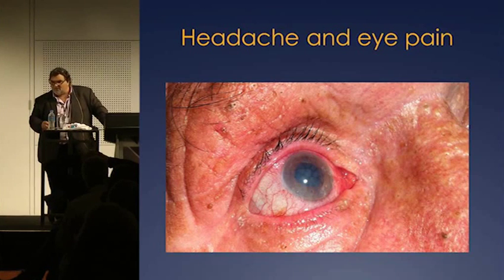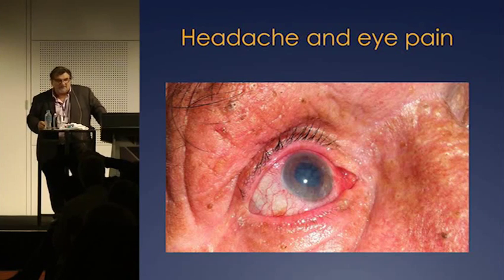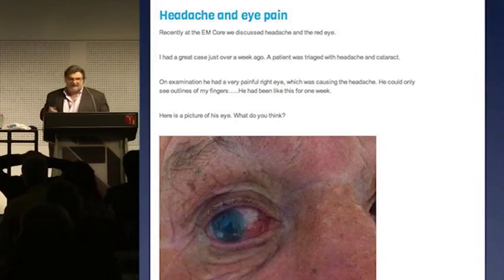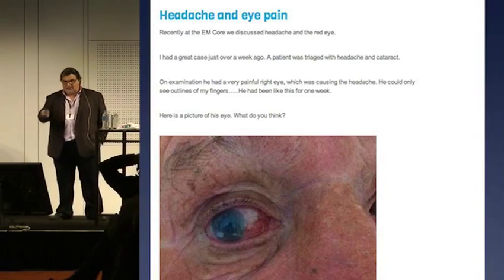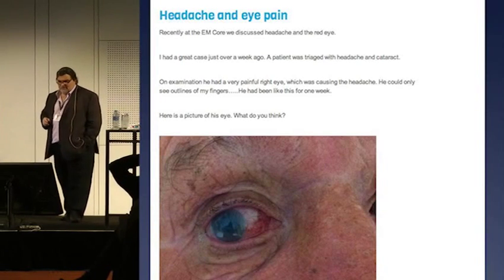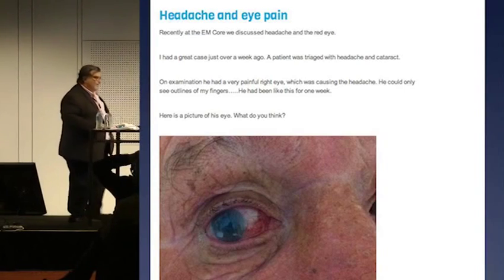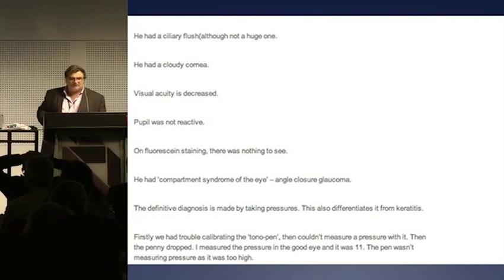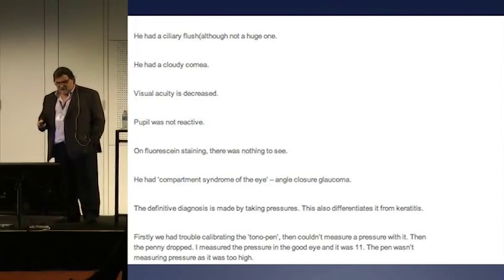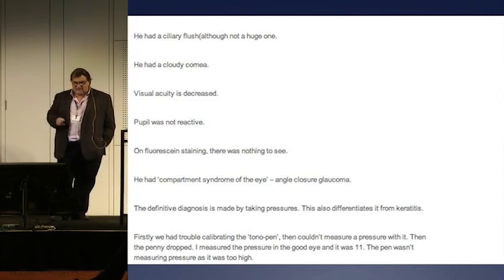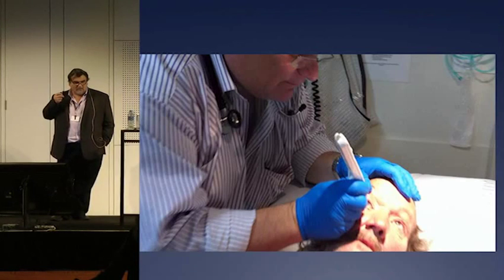This patient was a triage category four, going to be sitting in the waiting room for a long time. I said let me just go and have a quick look — and it was glaucoma. He had a very painful right eye causing headache, had been like this for a week, and could only see outlines of my fingers. He had a ciliary flush, a cloudy corneal area, decreased visual acuity, and a pupil that wasn't reactive. I put fluorescein staining in — nothing there. He had to have glaucoma. And how do I diagnose it? By measuring pressure in the eye with a tonometer.